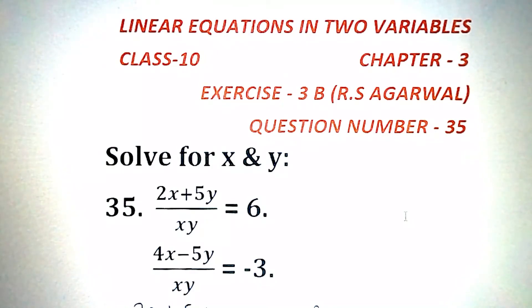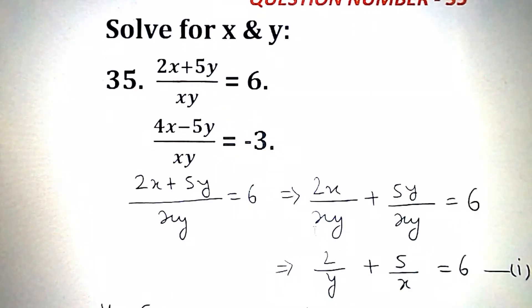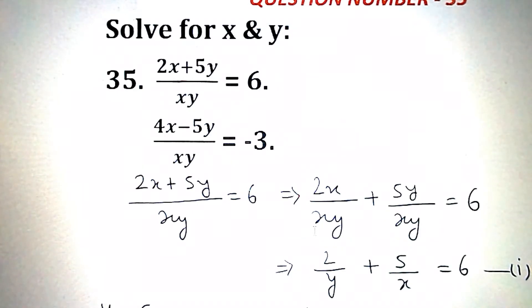Question number 35 is: 2x plus 5y divided by xy is equal to 6, and the second equation is 4x minus 5y divided by xy is equal to minus 3.